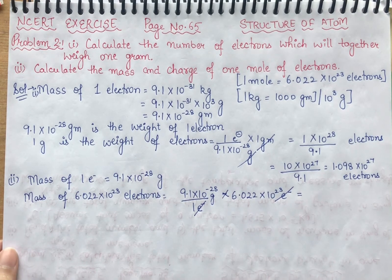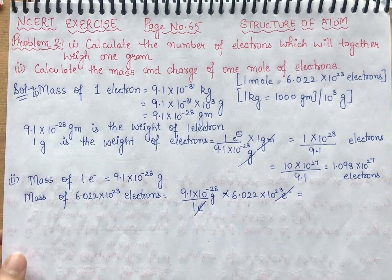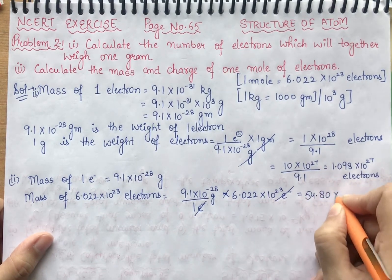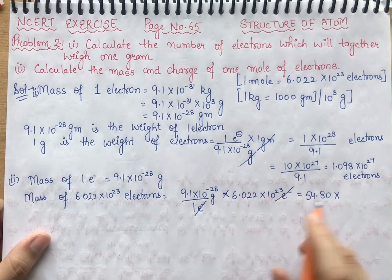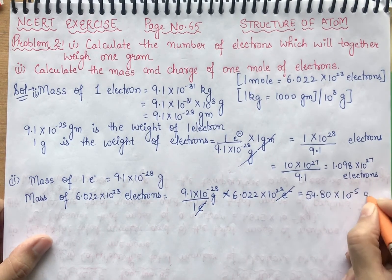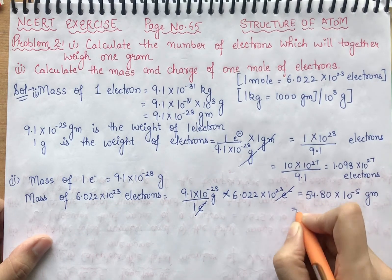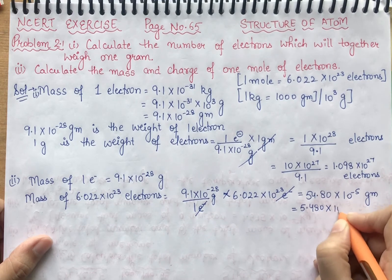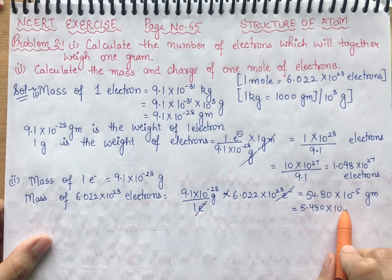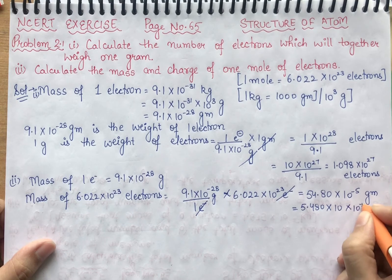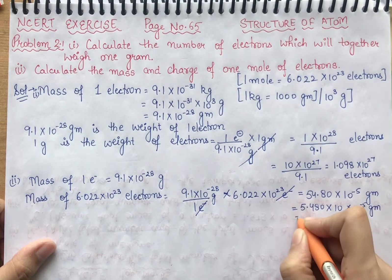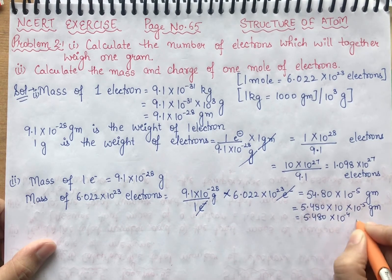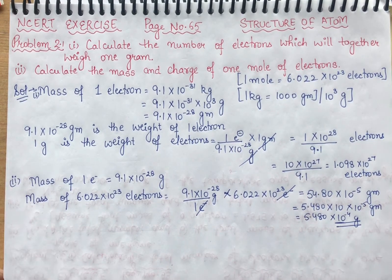So we multiply 9.1 into 10 raised to power minus 28 by 6.022 into 10 raised to power 23. The exponent gives minus 28 plus 23 equals minus 5, so we get 54.80 into 10 raised to power minus 5 grams, which simplifies to 5.480 into 10 raised to power minus 4 grams. That is the final answer for mass.